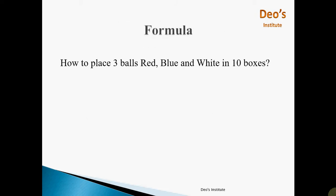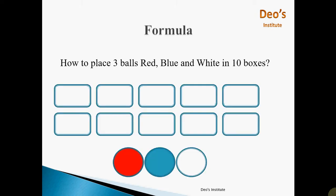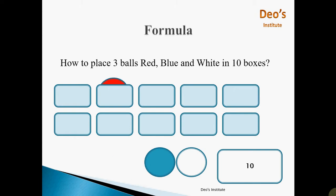Now we will see the formula of permutation. Consider we have to place 3 balls — red, blue and white — in 10 boxes. We have 10 boxes and 3 balls. To place the first red ball, we have total 10 boxes available, that is 10 possible outcomes. So the total number of outcomes to place the red ball is 10, and the red ball will be placed in one of the 10 boxes.